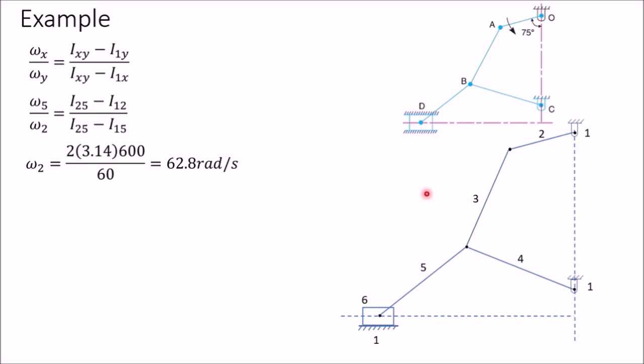There are 6 links, so the number of instantaneous centers will be 15, which is n(n−1)/2 = 6×5/2 = 15. You don't need to determine all 15 instantaneous centers — you only need these three: I₂₅, I₁₂, and I₁₅.